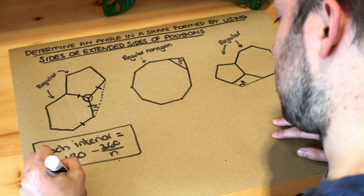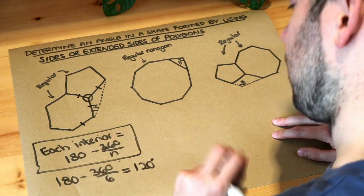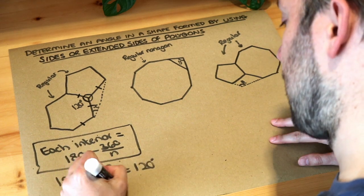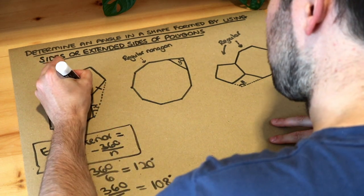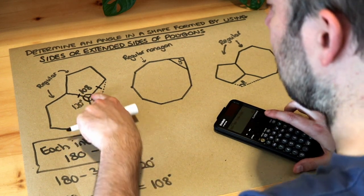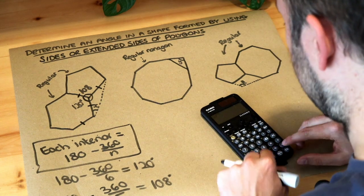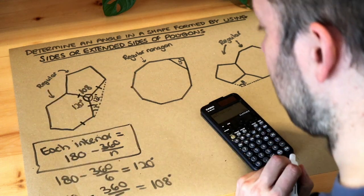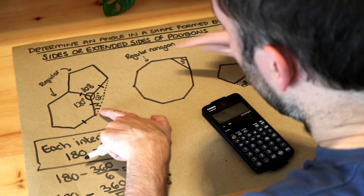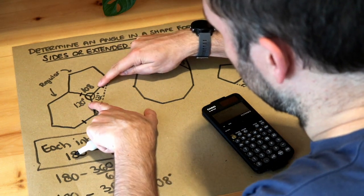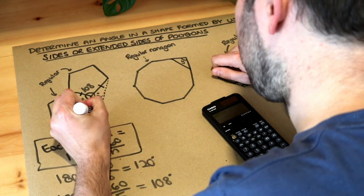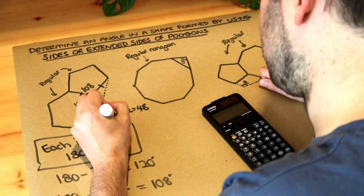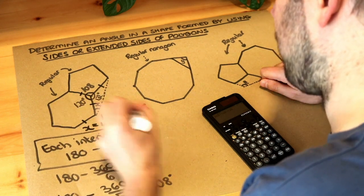For the hexagon: 180 minus 360 over 6 is 120 degrees. For the pentagon: 180 minus 360 over 5 gives 108 degrees. The angles around this single point add up to 360, so 360 minus 108 minus 120 is 132 degrees - that angle is 132 degrees. In this isosceles triangle the two base angles are equal, so we do 180 minus 132 which is 48 degrees, then 48 divided by 2 equals 24 degrees. So X is 24 degrees.